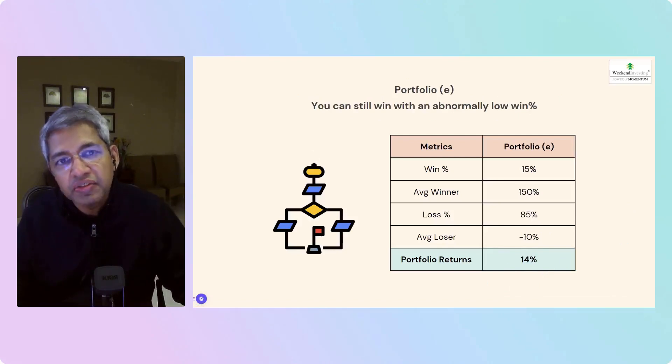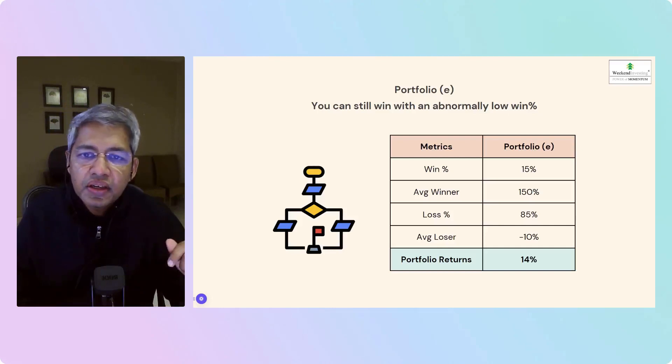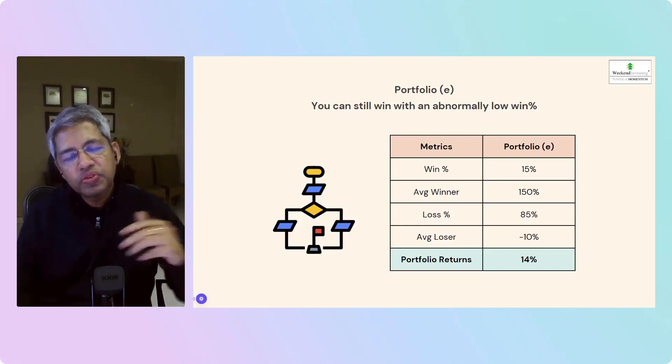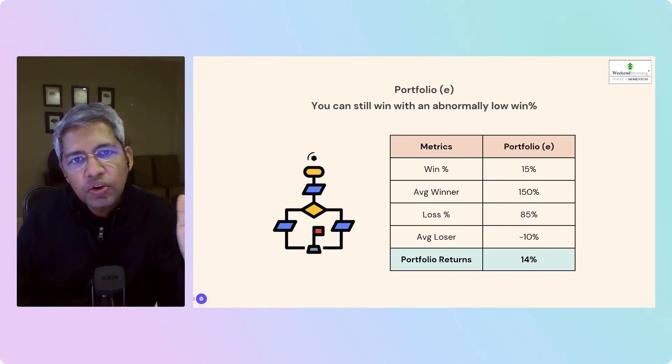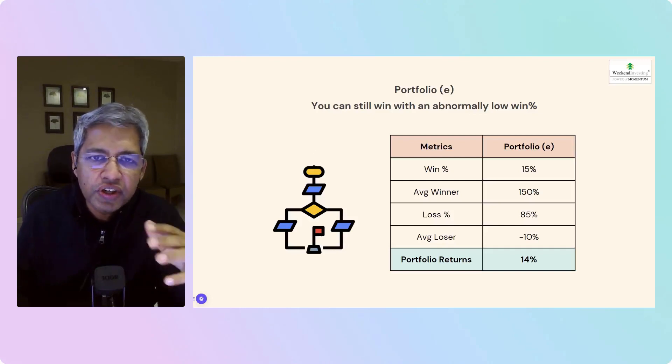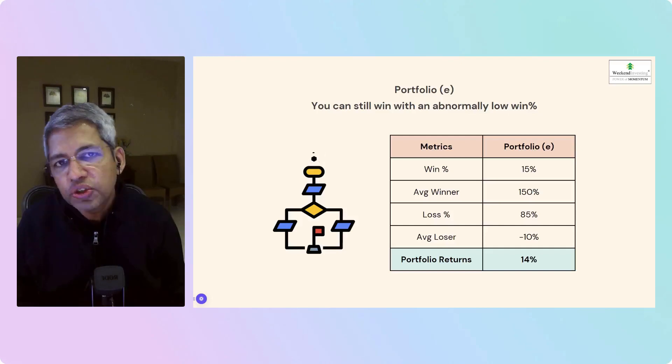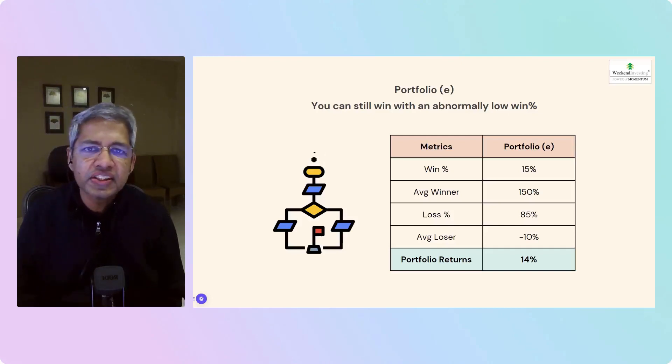Portfolio E: you can still win with abnormally low winning percentage. Just 15% is what we're winning. So we do 100 transactions in a year, only 15 of them go right. This is very difficult to do psychologically, but for the sake of it, Portfolio E is we do only 15 trades right, 85 trades go wrong. But our average winner brings home 150% on each transaction, our average loser loses us just 10%.